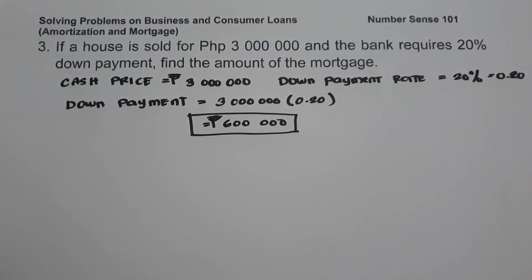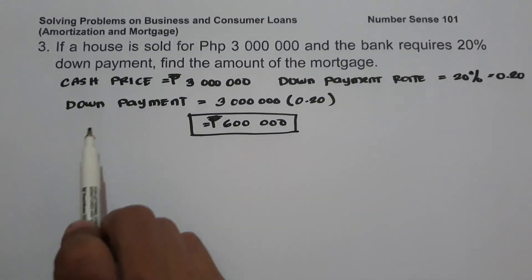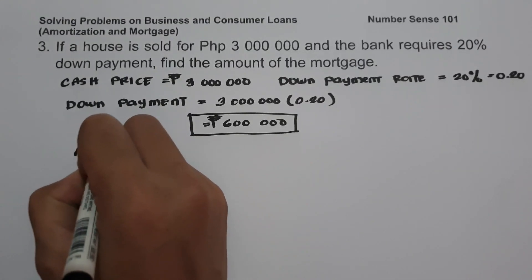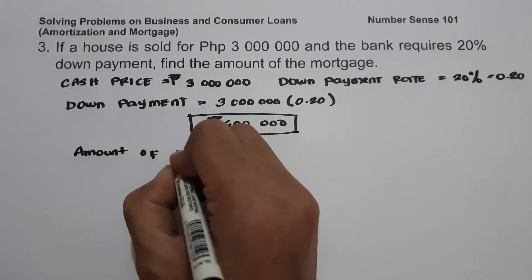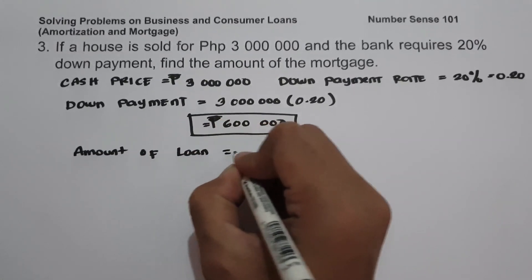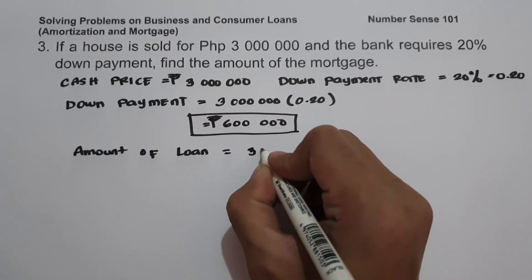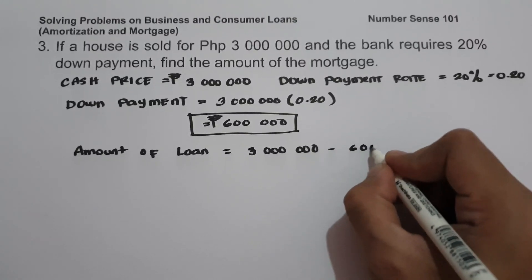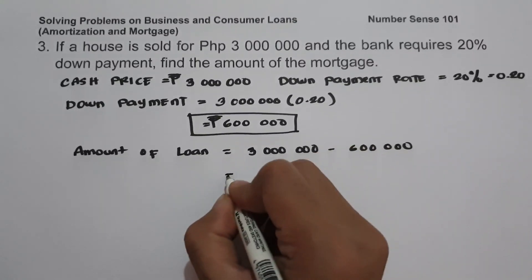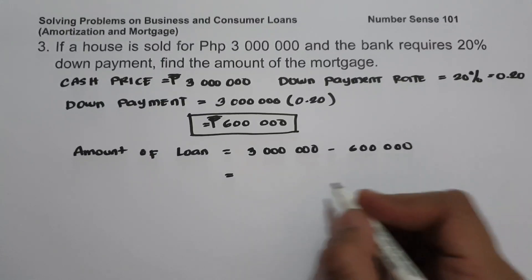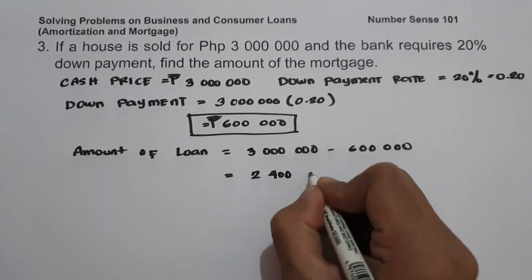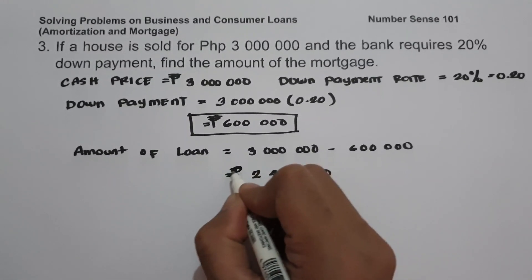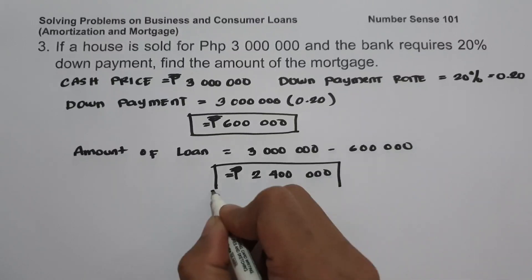To find the amount of the loan, we subtract the down payment from the cash price: amount of loan = 3,000,000 − 600,000 = 2,400,000 pesos. This is the amount of the mortgage.